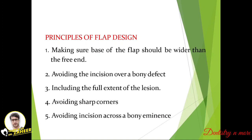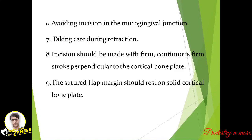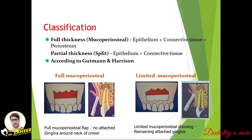Peri-radicular surgery mostly involves a flap procedure. The principles of flap design include: the base of the flap should be wider than the free end; avoid incision over a bony defect; include the full extent of the lesion; avoid sharp corners; avoid incision across a bony eminence; avoid incision at the mucogingival junction; take care during retraction; incision should be made with a firm continuous stroke perpendicular to the cortical plate; and the sutured flap margin should rest on solid cortical bone.